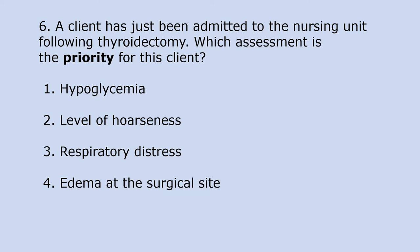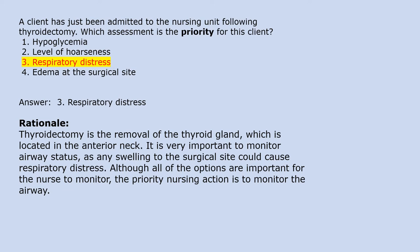A client has just been admitted to the nursing unit following thyroidectomy. Which assessment is the priority for this client? 1. Hypoglycemia. 2. Level of hoarseness. 3. Respiratory distress. 4. Edema at the surgical site. Answer 3. Respiratory distress. Rationale: Thyroidectomy is the removal of the thyroid gland, located in the anterior neck. It is very important to monitor airway status, as any swelling to the surgical site could cause respiratory distress. Although all options are important, the priority nursing action is to monitor the airway.